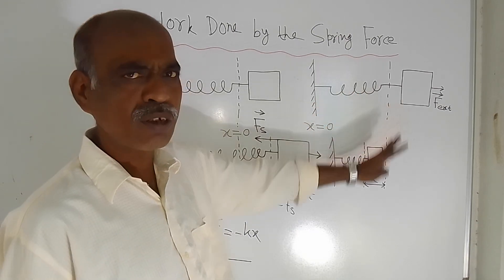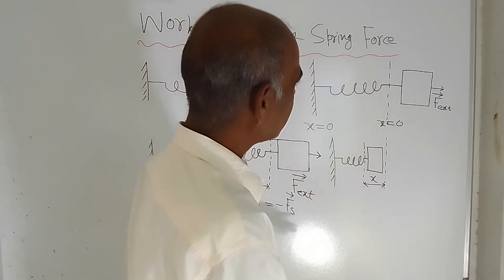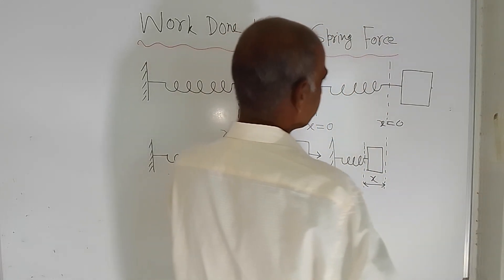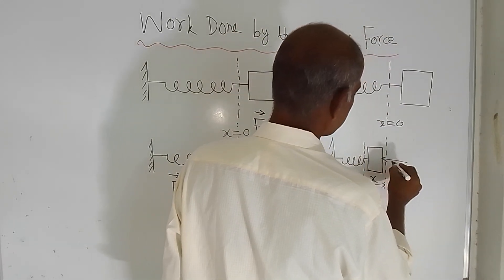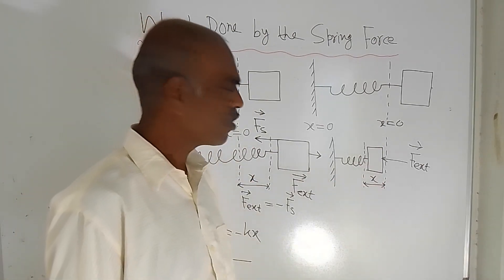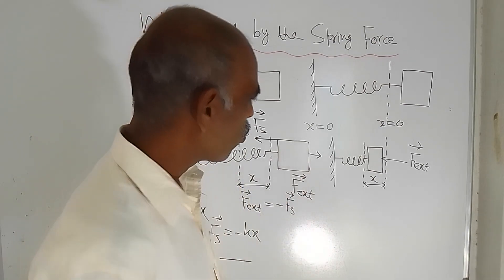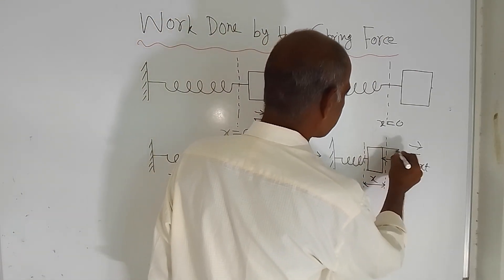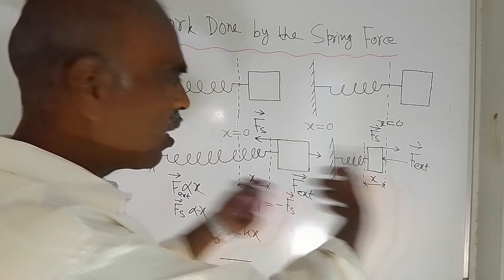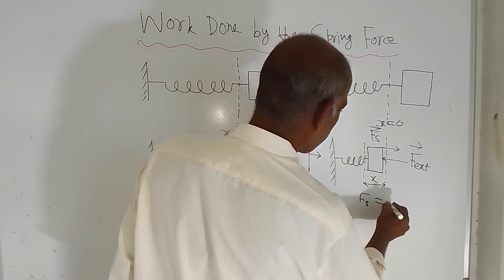For compression: the initial position is at x = 0. When an external force is applied in the leftward direction, there is a reduction in the length of the spring — that is compression. In that case, F_S acts in the rightward direction. So here also you get the same result: F_S = −Kx.